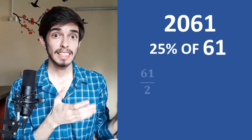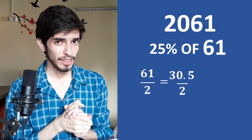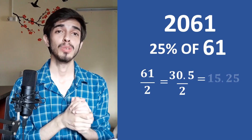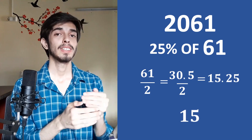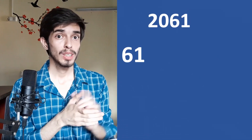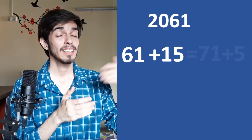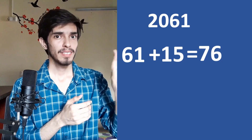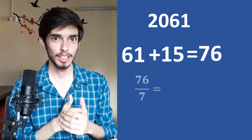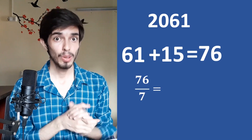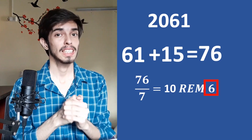Half of 61 is 30.5, and half of 30.5 is 15.25, so our tip is $15. Add this to the last two digits: 61 plus 15 equals 76. Divide by 7: 7×10 is 70, with a remainder of 6. So 6 is the year code of 2061. Note that you do not need to apply the leap year exception when calculating the year code.